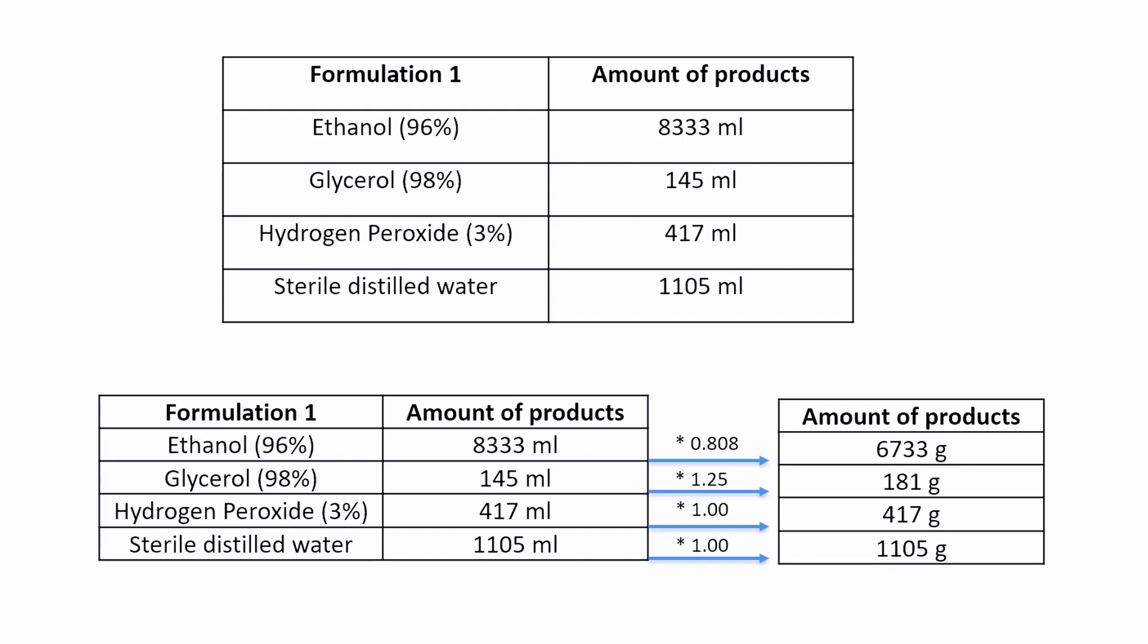As an example, a recipe formulated by the World Health Organization for 10 liters of product is provided: 8,333 ml of ethanol at 96% volume per volume, 417 ml of hydrogen peroxide at 3% volume per volume, 145 ml of glycerin at 98% volume per volume, and 1,105 ml of distilled water.